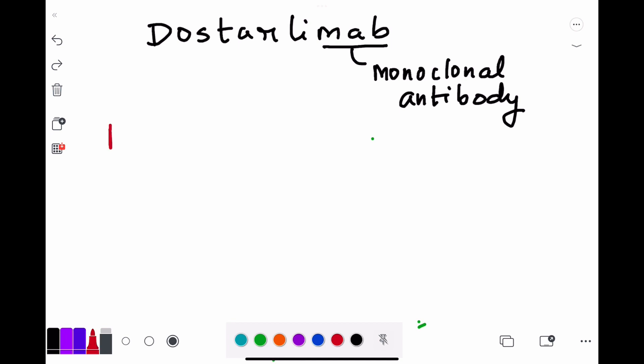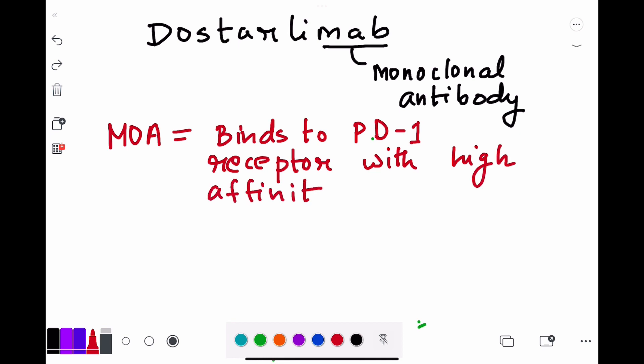So what is the mechanism of action of Dostarlimab? Basically, it binds to PD-1 receptor with very high affinity. Now what is this PD-1? I will discuss soon in the next part. Just know that the mechanism of action is it binds to PD-1 receptor with very high affinity.